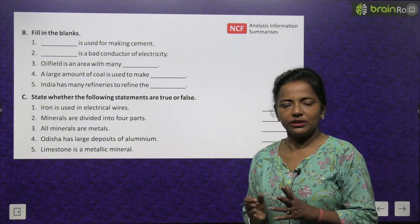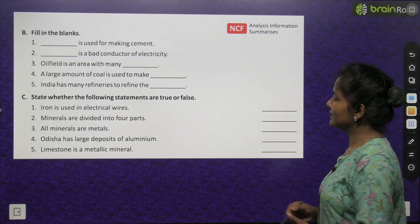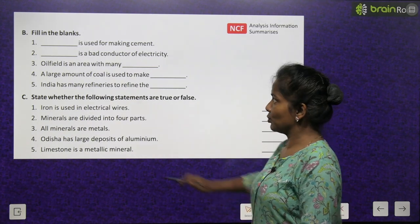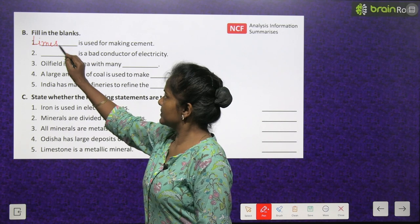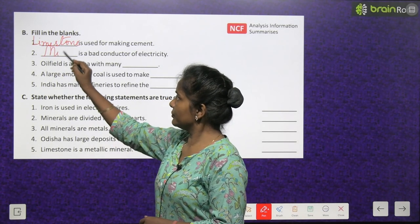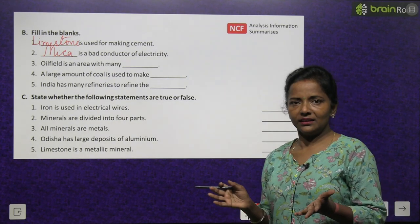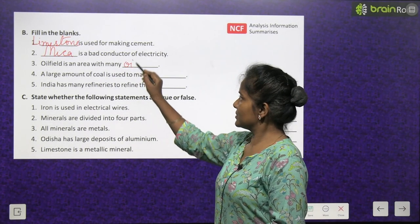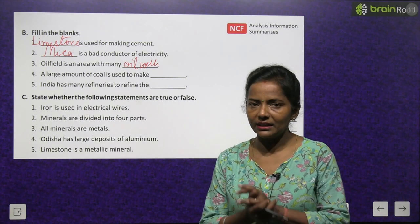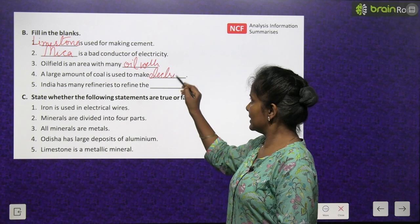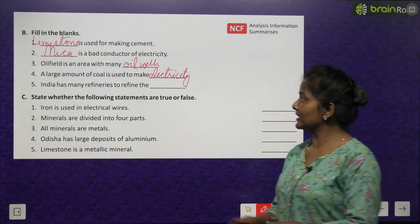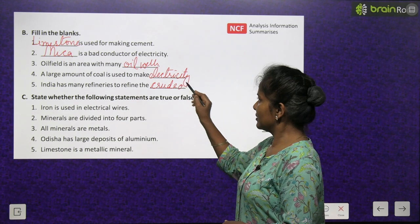Fill in the blanks: Limestone is used for making cement. Mica is a bad conductor of electricity. Oil field is an area with many oil wells. A large amount of coal is used to make electricity. India has many refineries to refine the crude oil.